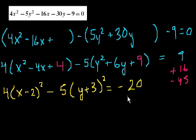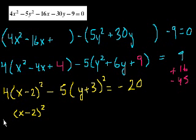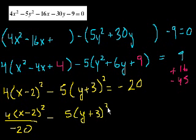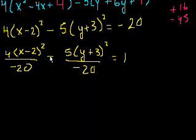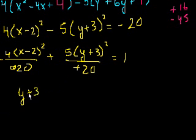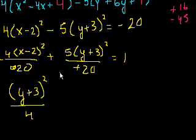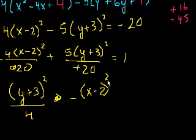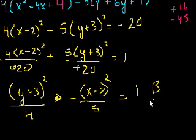Divide both sides by −20. So: 4/(−20) times (x − 2)² minus 5/(−20) times (y + 3)² = 1. Simplifying: the 5/20 term becomes positive and the 4/20 term becomes negative. Rearranging: (y + 3)²/4 − (x − 2)²/5 = 1. That is choice B. See you in the next video.